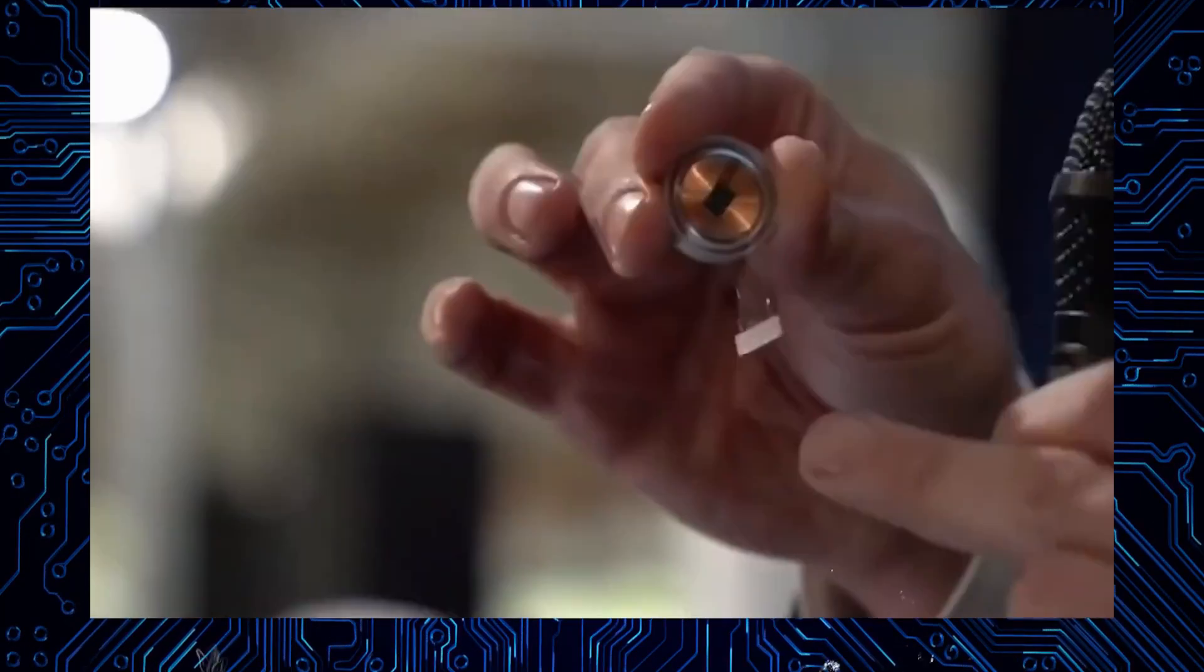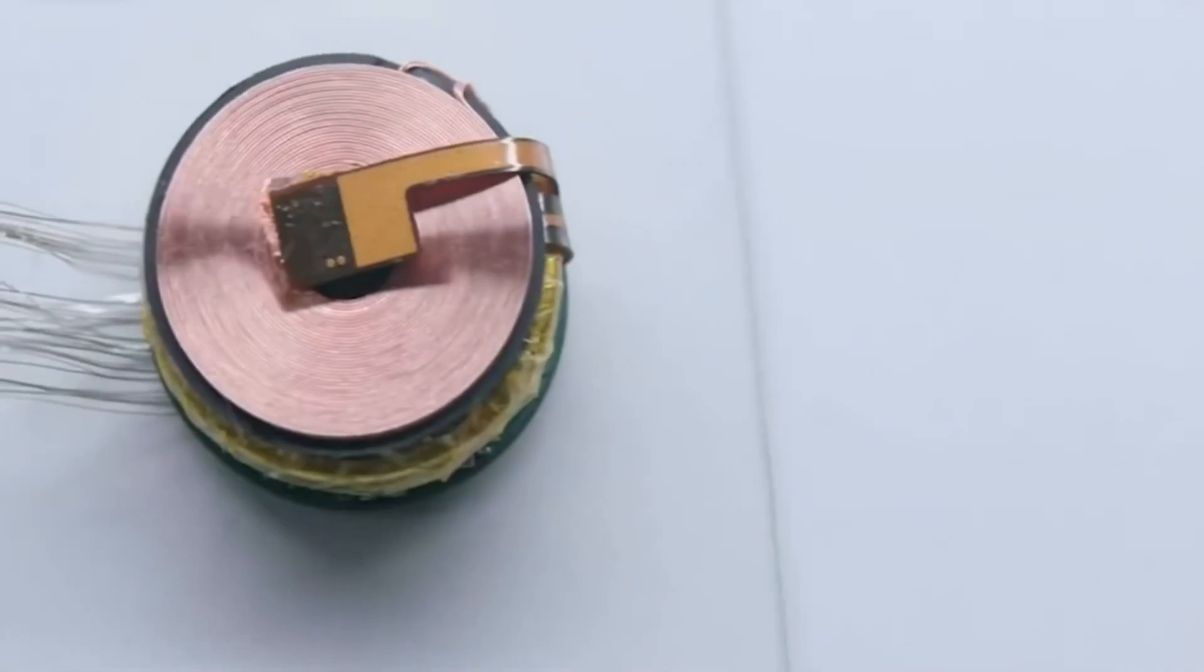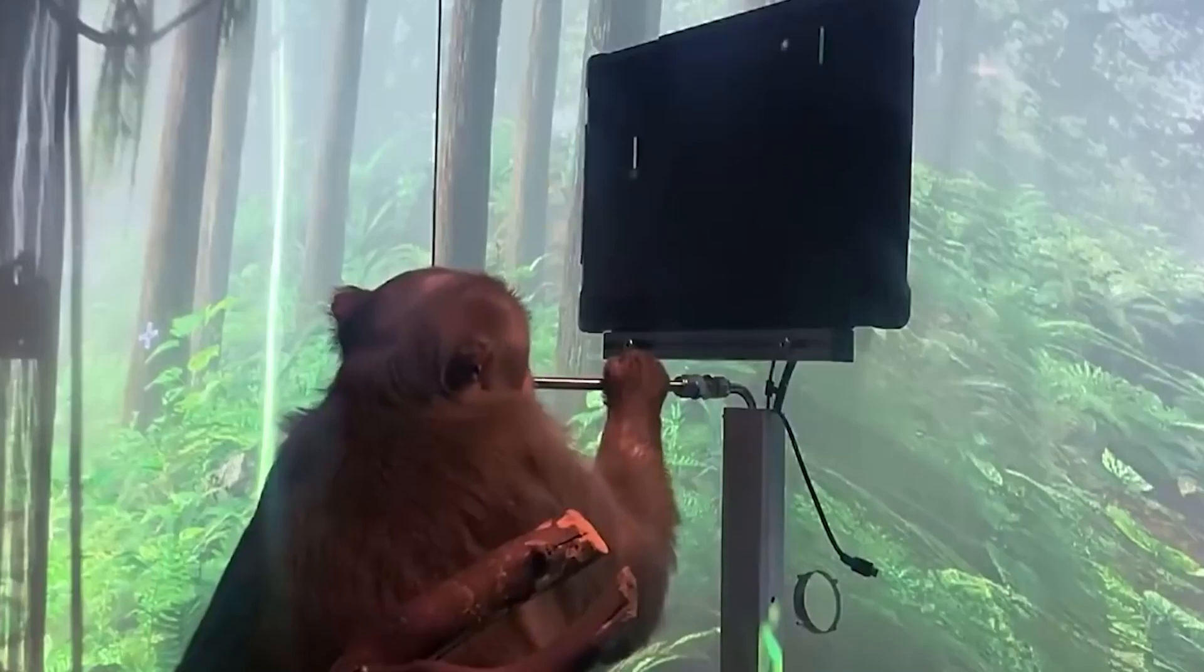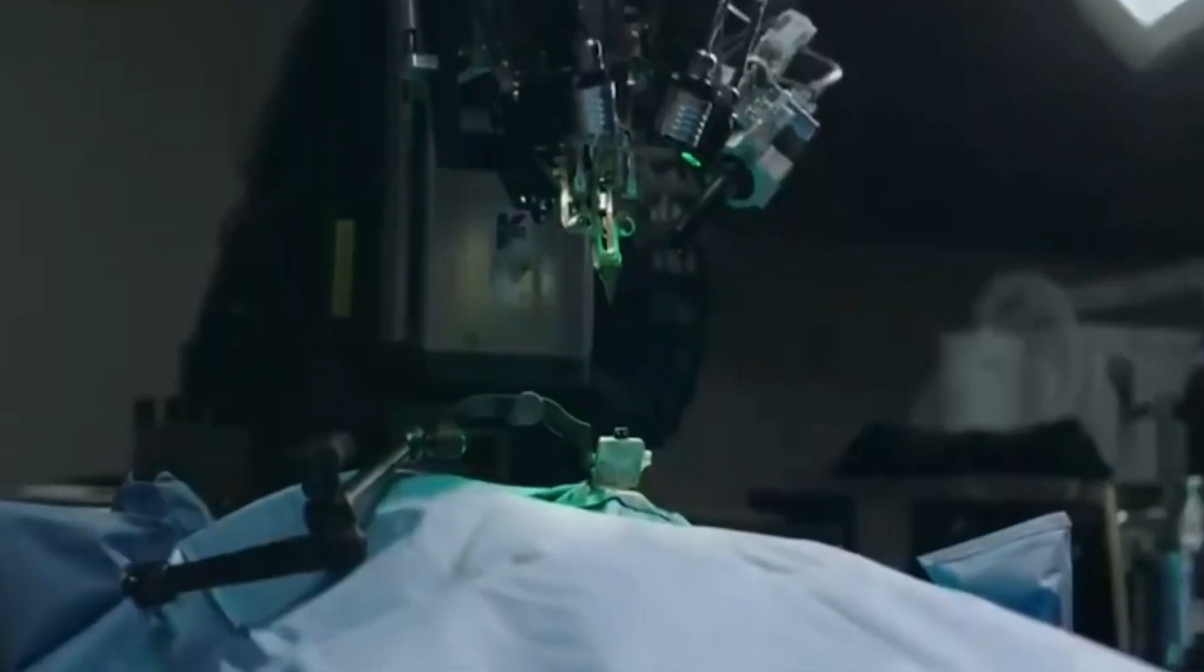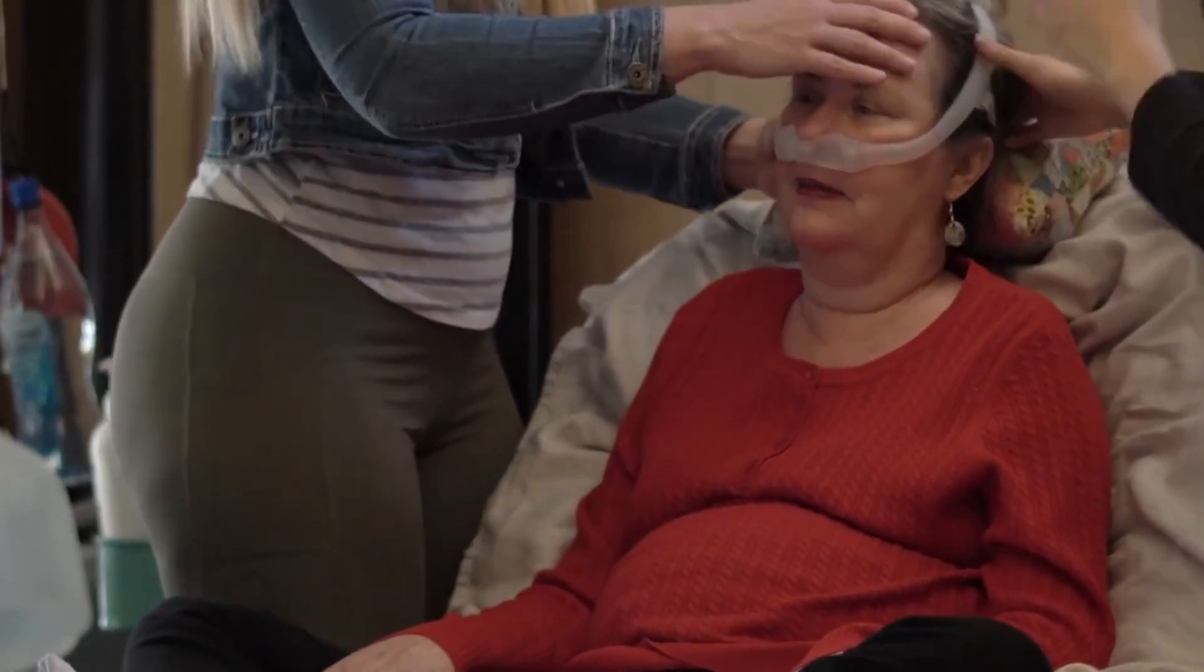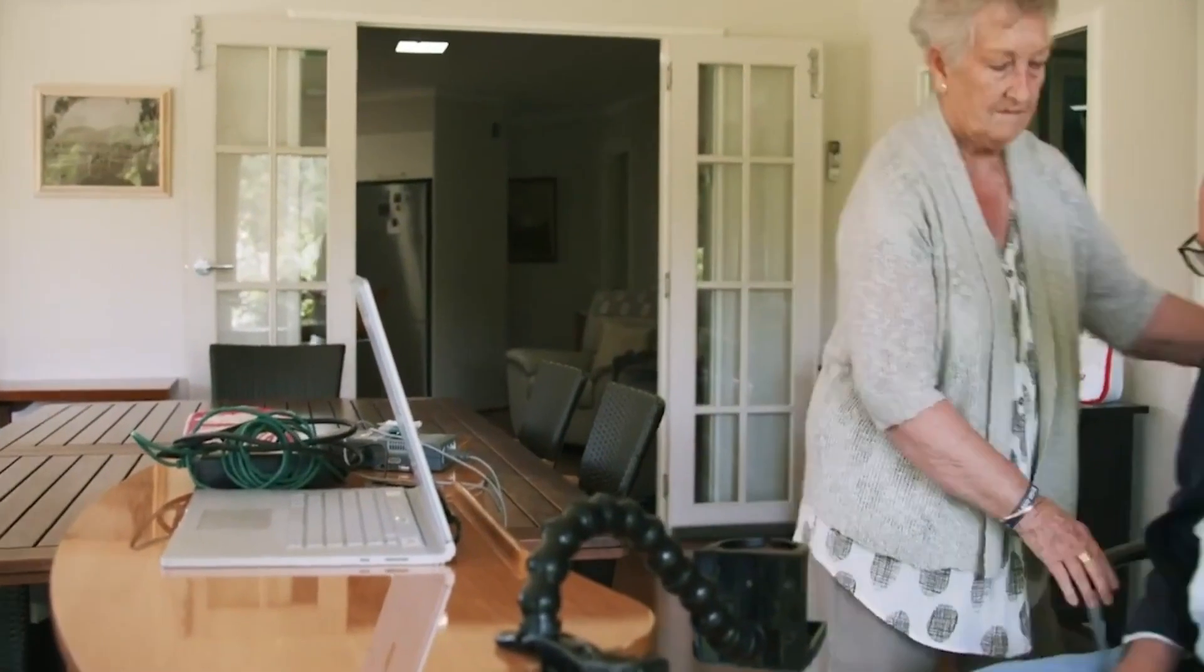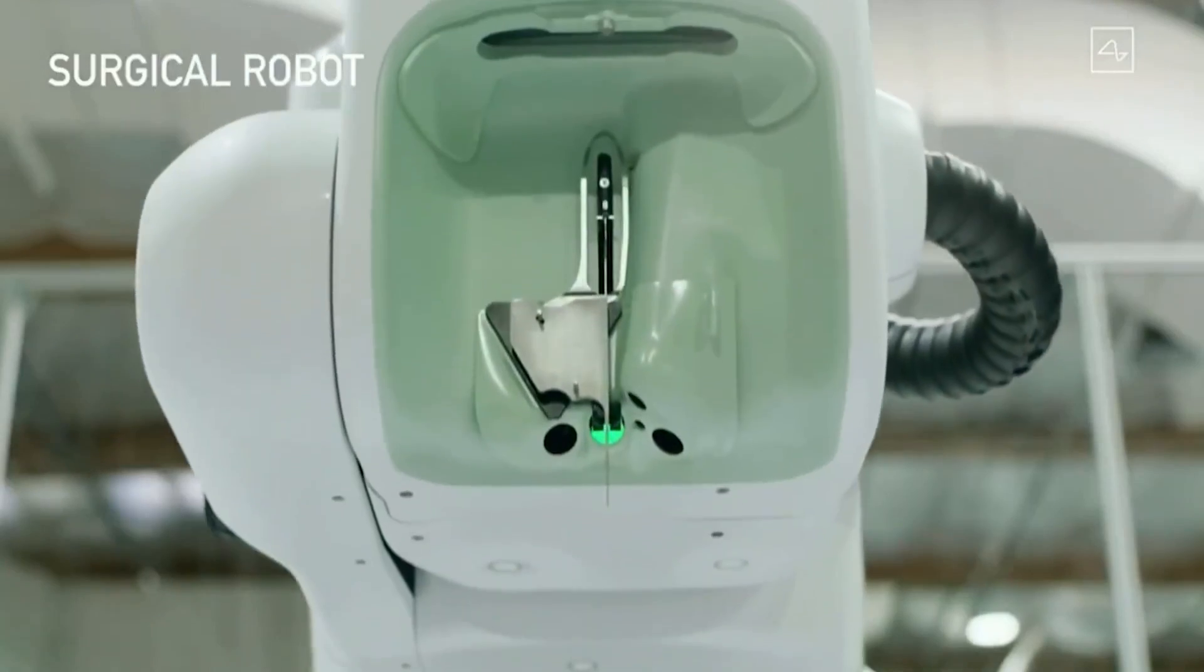As Neuralink moves into human trials, it's expected that the level of scrutiny will intensify. It's crucial to emphasize that Neuralink's mission extends beyond merely implanting chips in brains. Their ultimate goal is to leverage BCI technology to cure brain diseases, correct disabilities, and address spinal cord injuries. They seek to empower individuals with paralysis by enabling them to control external devices with their thoughts.